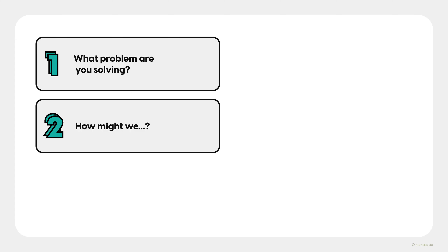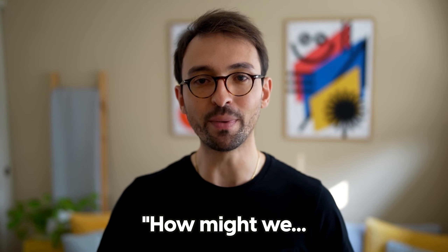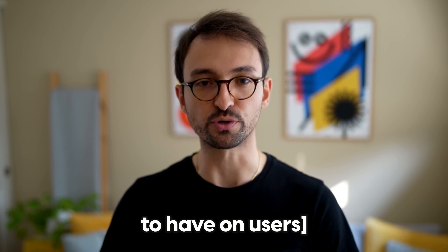Step two, you'll create a design question, also called a "how might we" question. How implies that this problem is solvable. Might implies there are many possible ways to solve the problem. And we implies that we're all going to work together to solve the problem. While you'll be completing this by yourself, in the future it's best to do this with a group to get multiple perspectives. Basically, you fill in the following sentence: "How might we [insert goal you're trying to have on users]?"